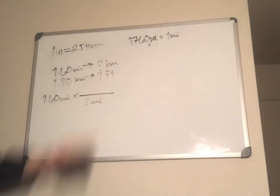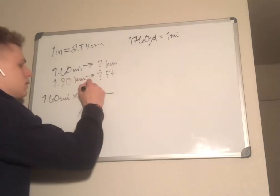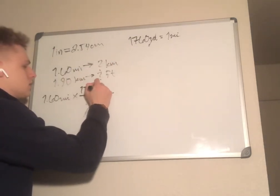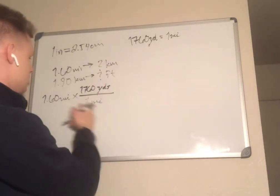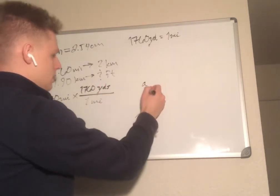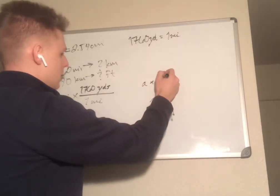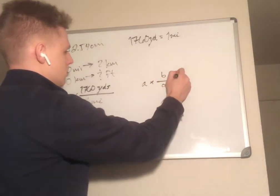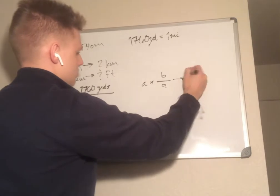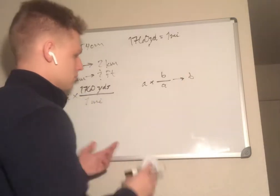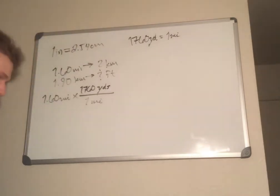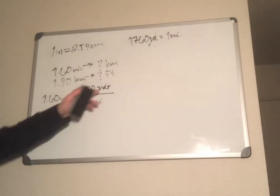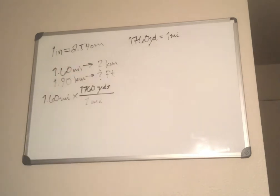We put 1760 yards up on top. So if you have A divided by B over A, you just get B because those A's cancel out. That's the core idea of dimensional analysis — you just keep doing that all the way until you get to kilometers.